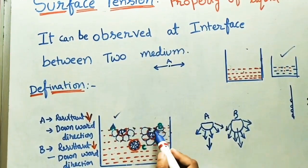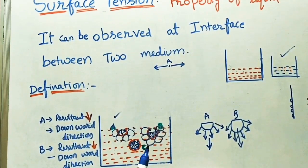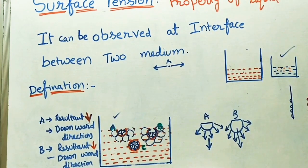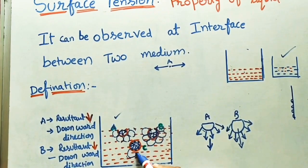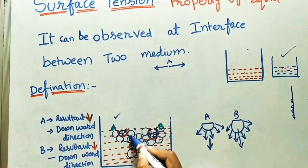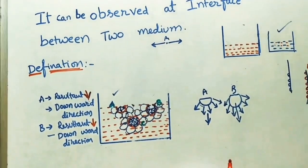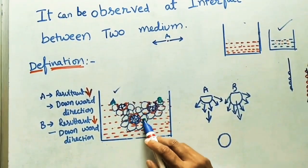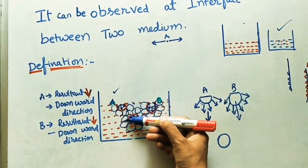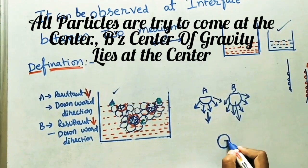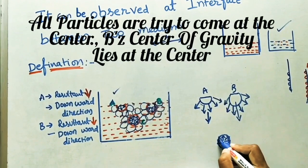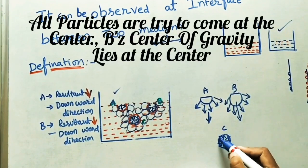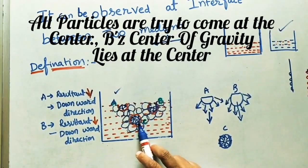All molecules — A and B — will try to come at the center of the liquid. This is an important point: all particles will try to come at the center of the liquid. Now take molecule C, which is completely inside the liquid. C is surrounded symmetrically by molecules — the number of molecules on one side equals the number on the other side. So the attractive forces are symmetric, and the resultant is zero. C remains at its position.